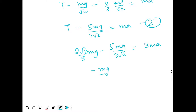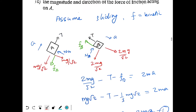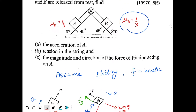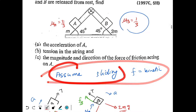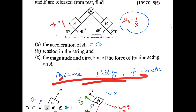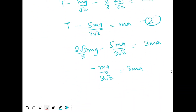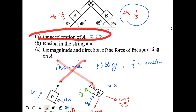We get −mg/(3√2) = 3ma, giving a negative value. This means block B cannot go down — our assumption of sliding leads to a contradiction. Since block B can't go down and block A can't go down either (it's lighter), the assumption of sliding is wrong. Therefore there is no sliding, acceleration = 0, and friction is static.